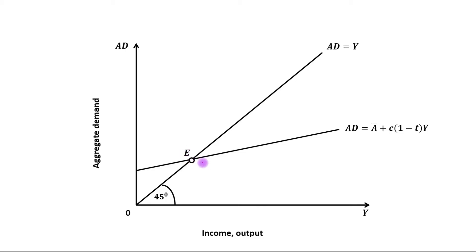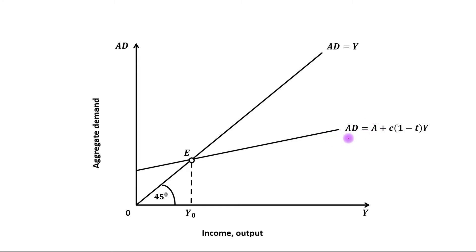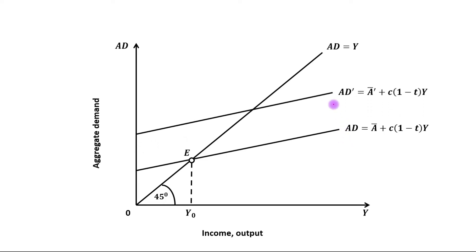Equilibrium is achieved at point E and the initial equilibrium level of output is OY₀. Now suppose that the government increases government expenditure, due to which autonomous spending will increase and this will lead to an upward shift in the AD curve.